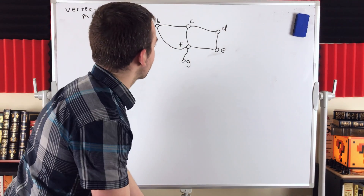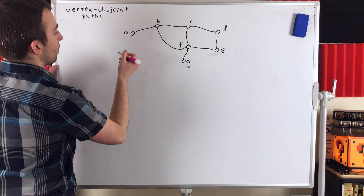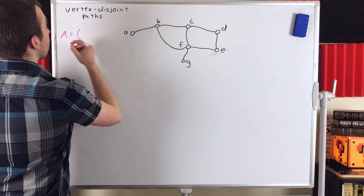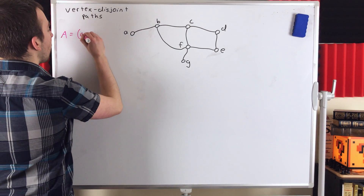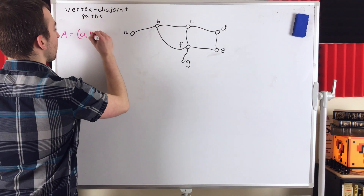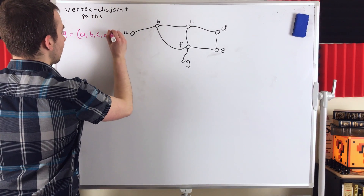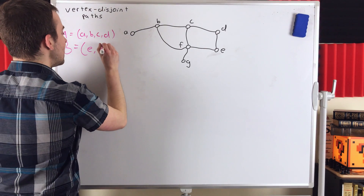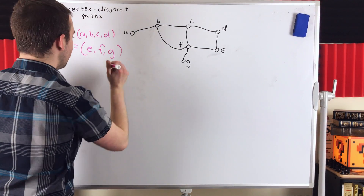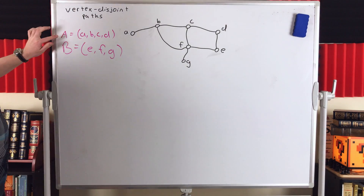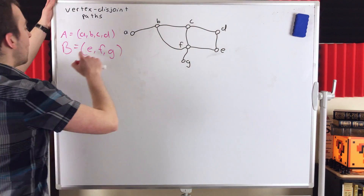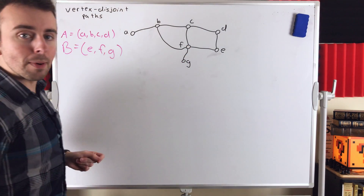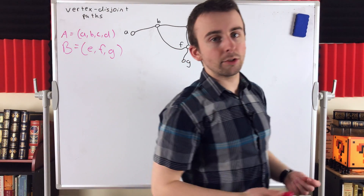So what are some examples of vertex disjoint paths in this graph here? Well, there are plenty of examples. Here's just two examples. Suppose we consider the path A going from the vertex A to the vertex B to C to D, and then another path B going from E to F to G. So this path A goes from A to B to C to D, and the path B goes from E to F to G. Those two paths are vertex disjoint.